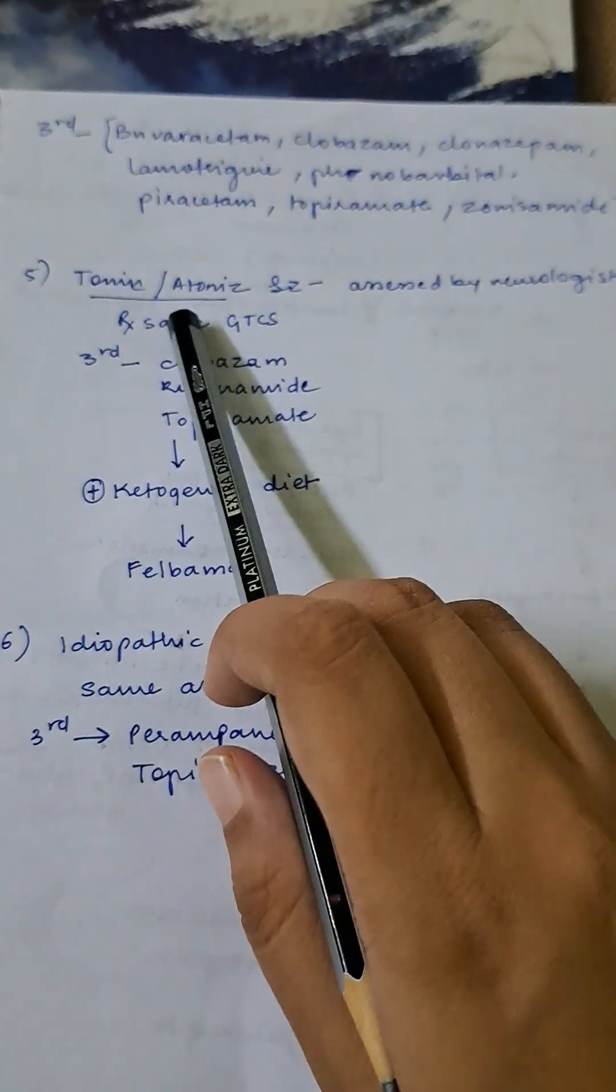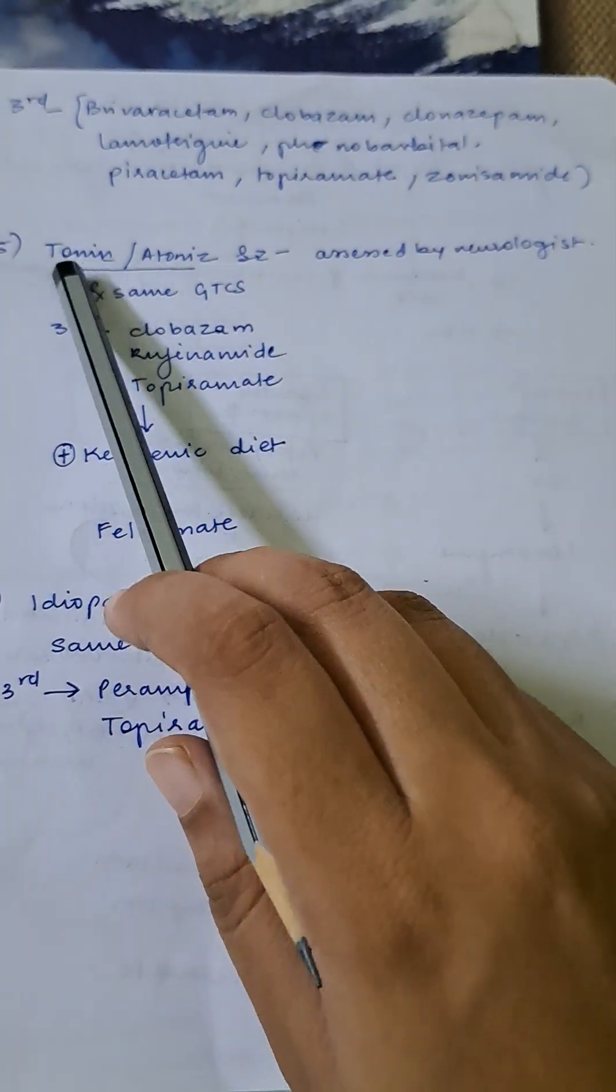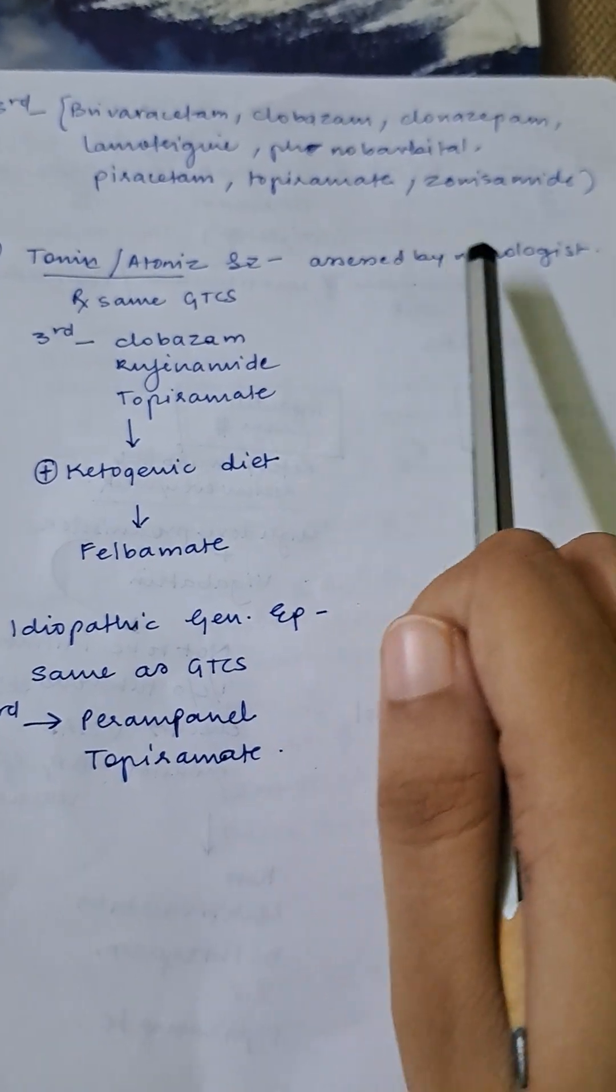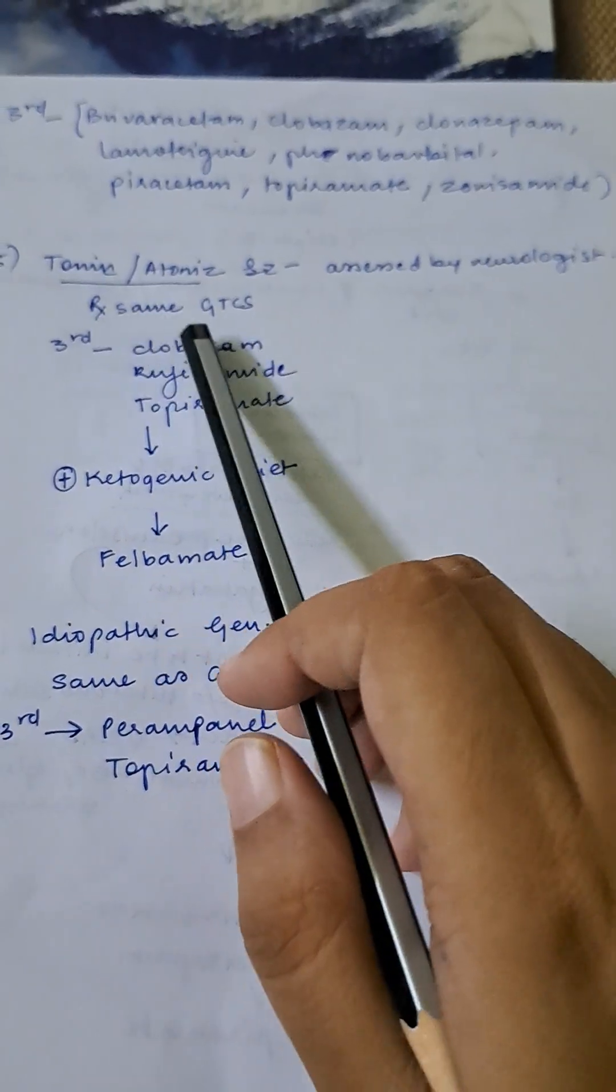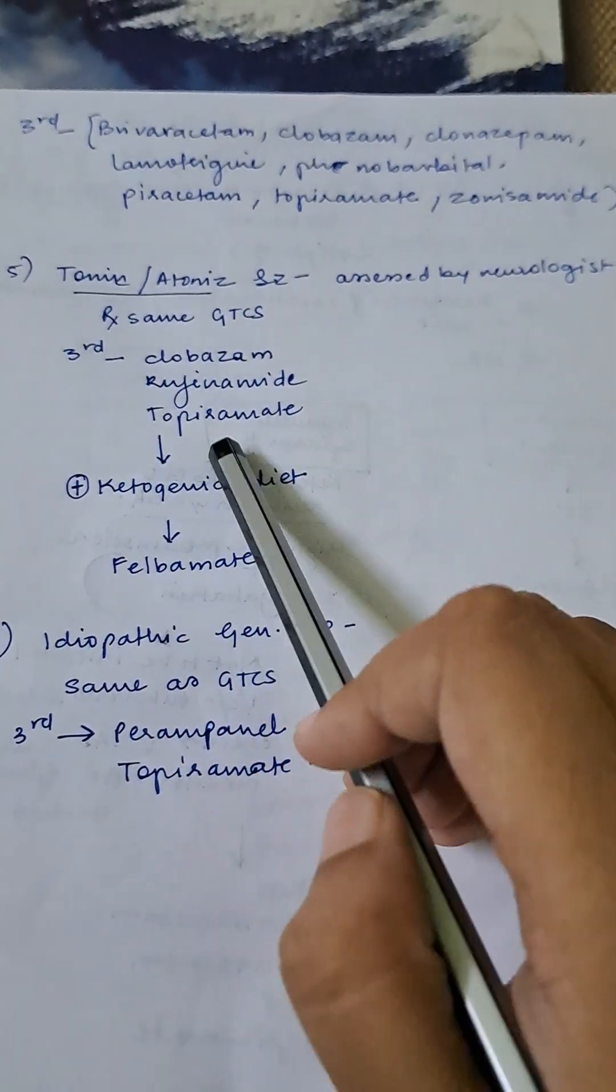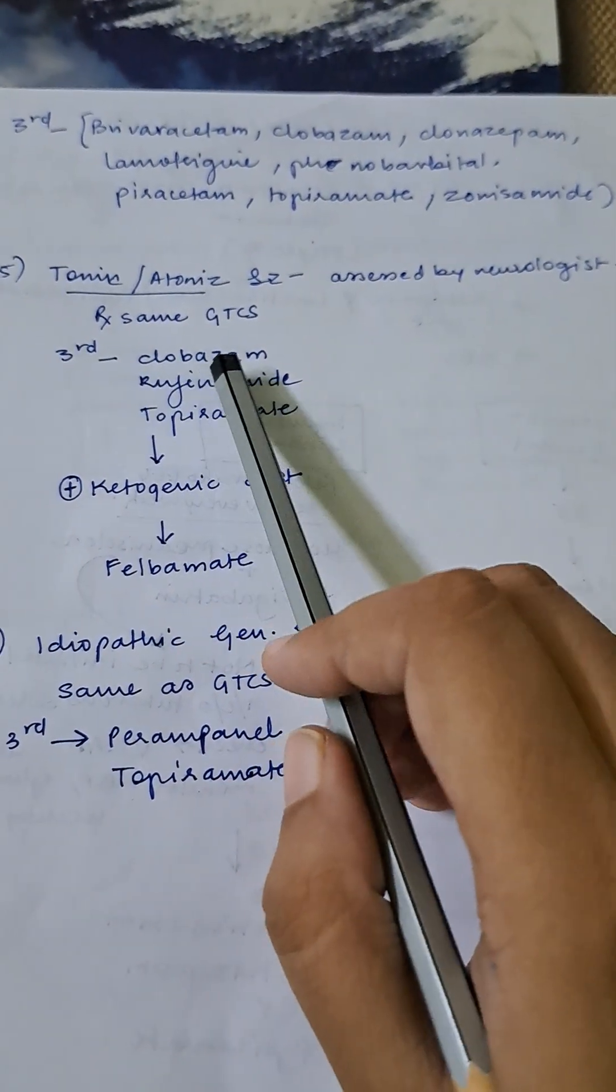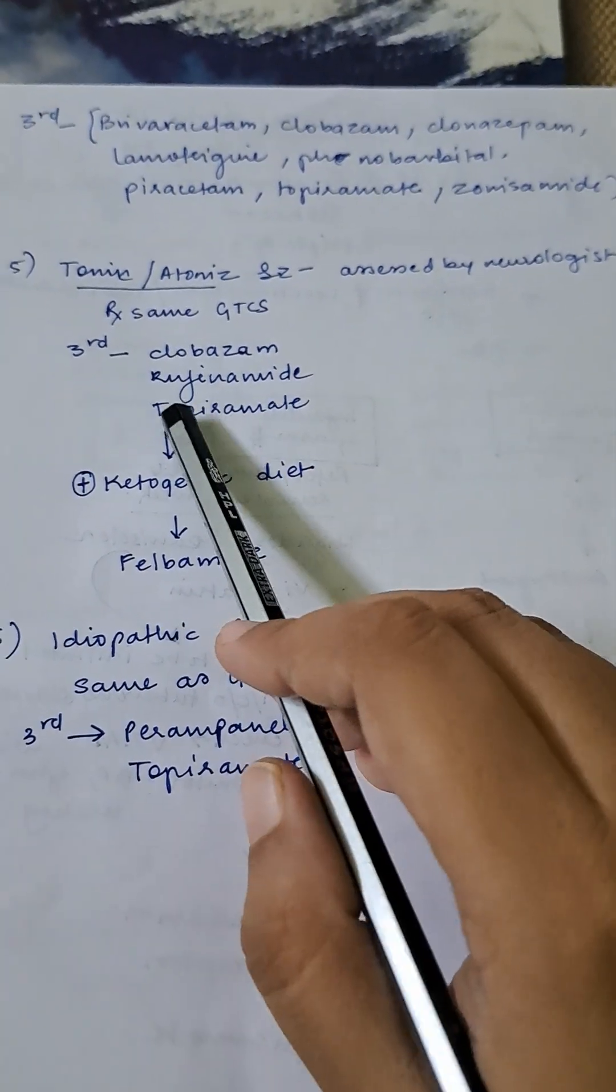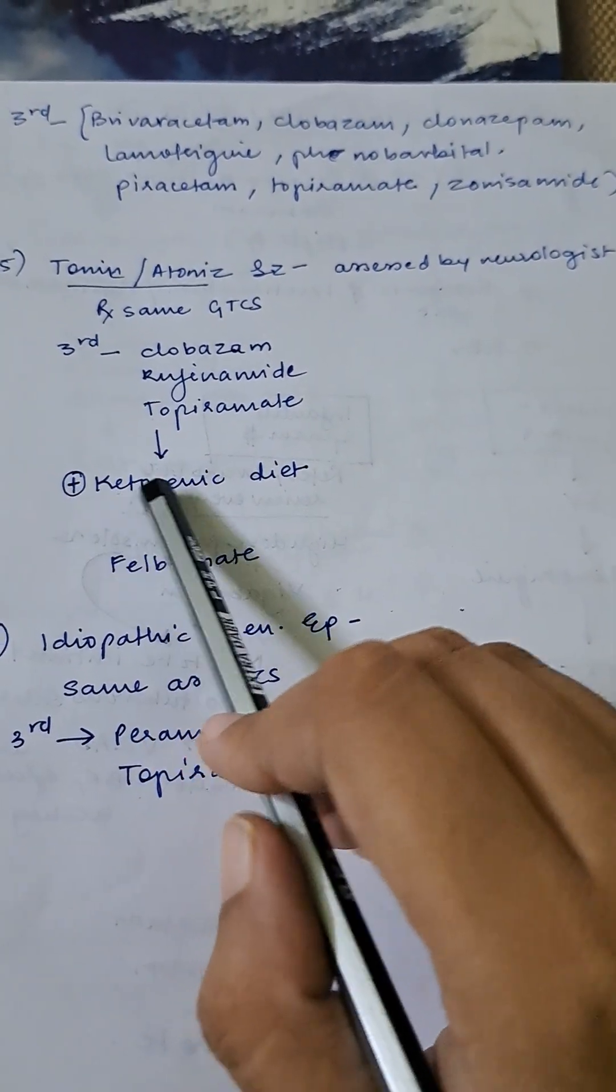Tonic or atonic seizures: this has to be assessed by a neurologist. Treatment is same as generalized tonic-clonic seizure, but third line is different in this case. Here you can either give clobazam, rufinamide, or topiramate. If this does not work, then you will add on ketogenic diet.